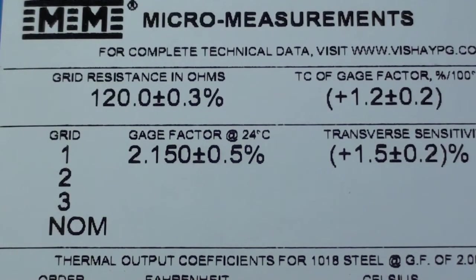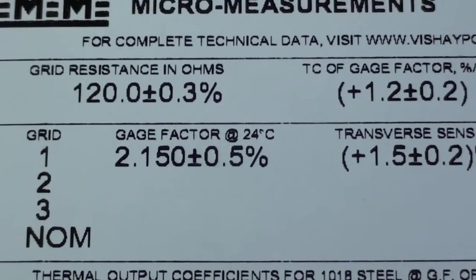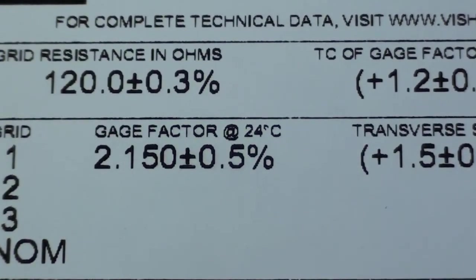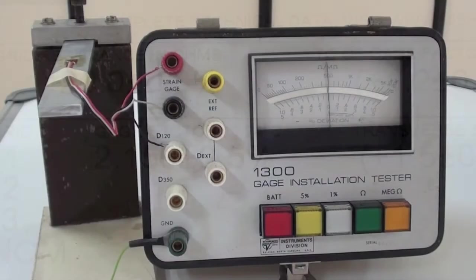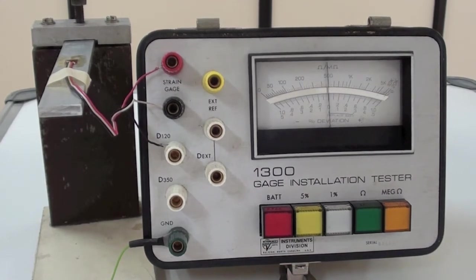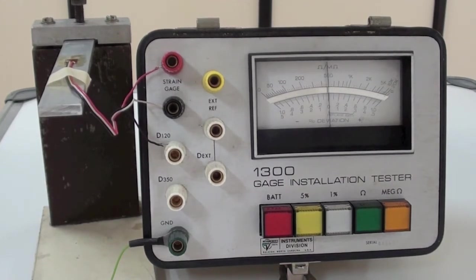Precision strain gauges such as those from Micro-Measurements have a tight tolerance on the resistance and this should be checked for the bonded gauge. For this, a Model 1300 gauge installation tester made by Micro-Measurements is used. It can measure the percentage deviation of the gauge's resistance from the specified value and also the insulation resistance between the gauge and the body of the component.